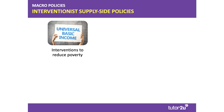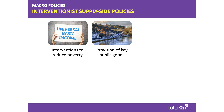There are many interventionist policies to consider. Some governments think one of the key ways to address supply side weakness is to use a fiscal supply side policy — in particular, to intervene to reduce the depth and scale of poverty. There's growing interest, for example, in universal basic income as a type of intervention to support the incomes of some of the poorest parts of the population. The government may also feel that the free market fails to provide adequate public goods essential to the efficient working of the economy, such as environmental public goods like flood defenses.